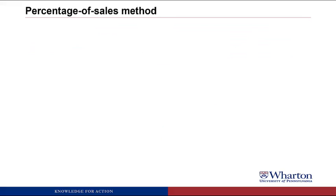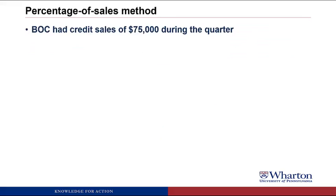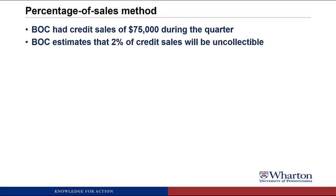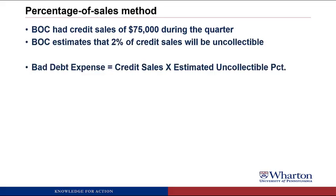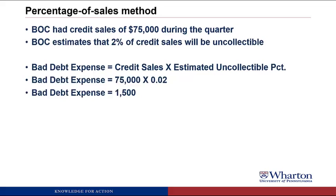The first method we're going to use is the percent of sales method. BOC had credit sales of $75,000 during the quarter. They estimate that 2% of the credit sales will be uncollectible. So bad debt expense equals credit sales times the estimated uncollectible percentage: $75,000 × 2% = $1,500 of bad debt expense for the quarter.